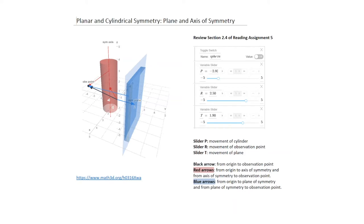In this problem, I've shown a cylinder and a plate. In the case of a plate, there's a symmetry plane shown as the lightly blue-shaded region, and an axis of symmetry passes right through the center of the cylinder. You can use the P, R, and T sliders: P governs the movement of the cylinder back and forth, R is the movement of the observation point where the field is calculated, and T is the movement of the plane.